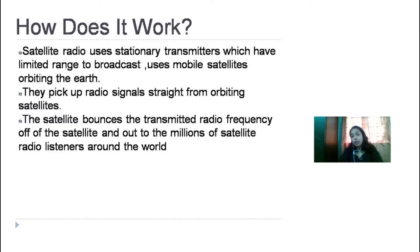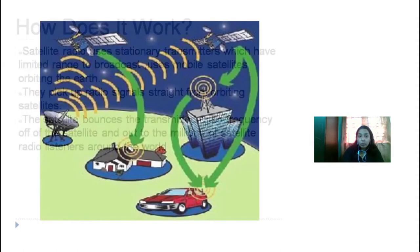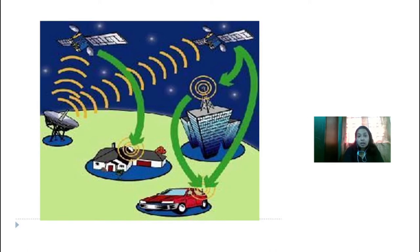How does satellite radio work? Satellite radio uses mobile transmitters orbiting the earth rather than stationary transmitters which have limited range. They pick up radio signals straight from orbiting satellites, and the satellite bounces the transmitted radio frequency out to millions of satellite radio listeners around the world. You can see the orbit here in this picture, a satellite and a terrestrial antenna, and how they pick up signals. You can see all these cars, houses, and big complexes with antennas that can directly receive the signal from the satellite.